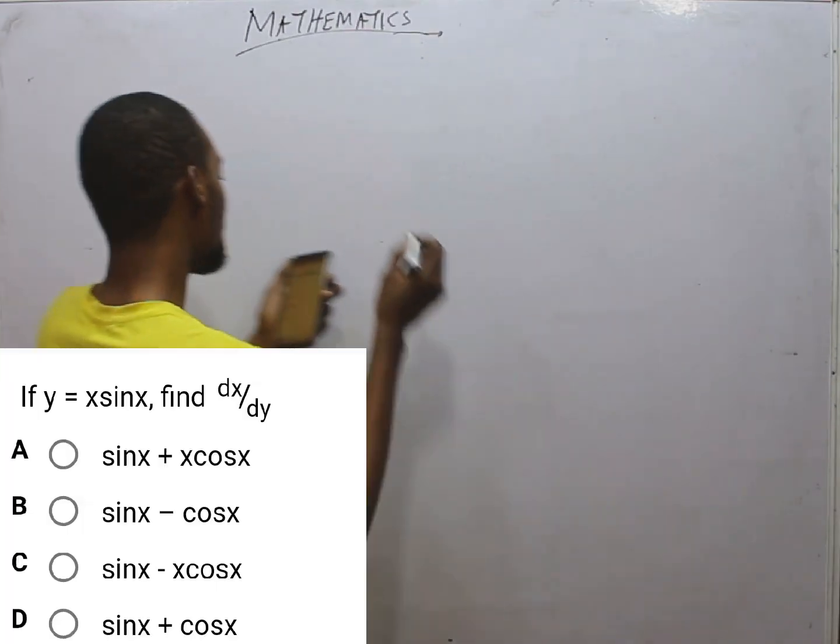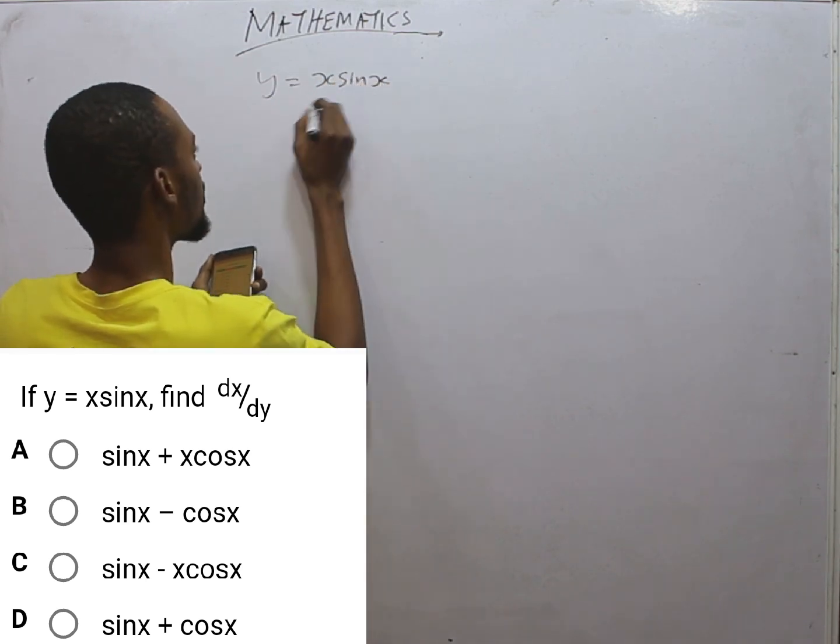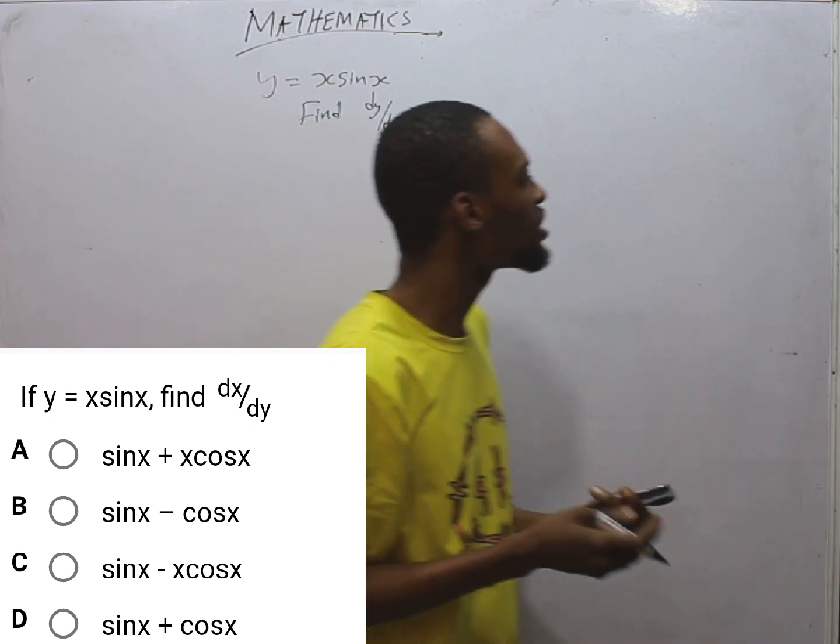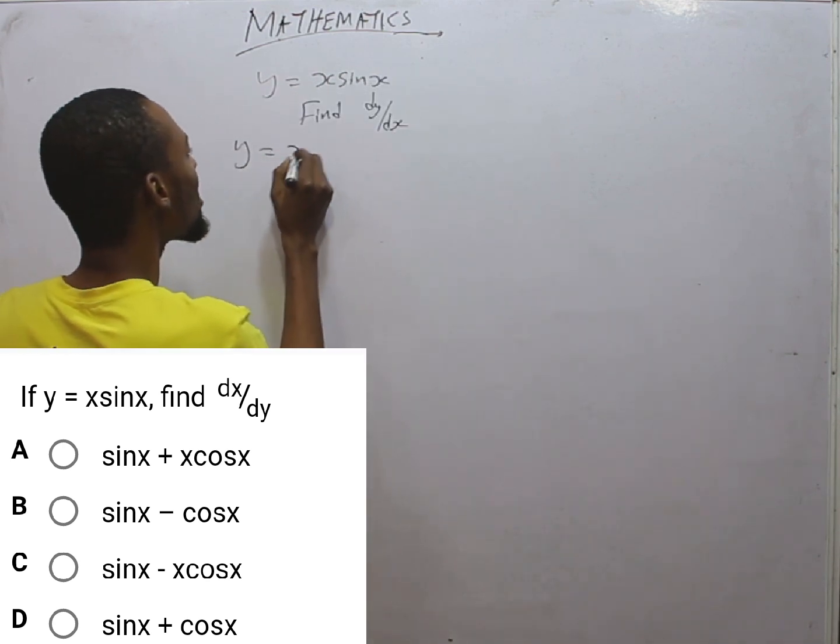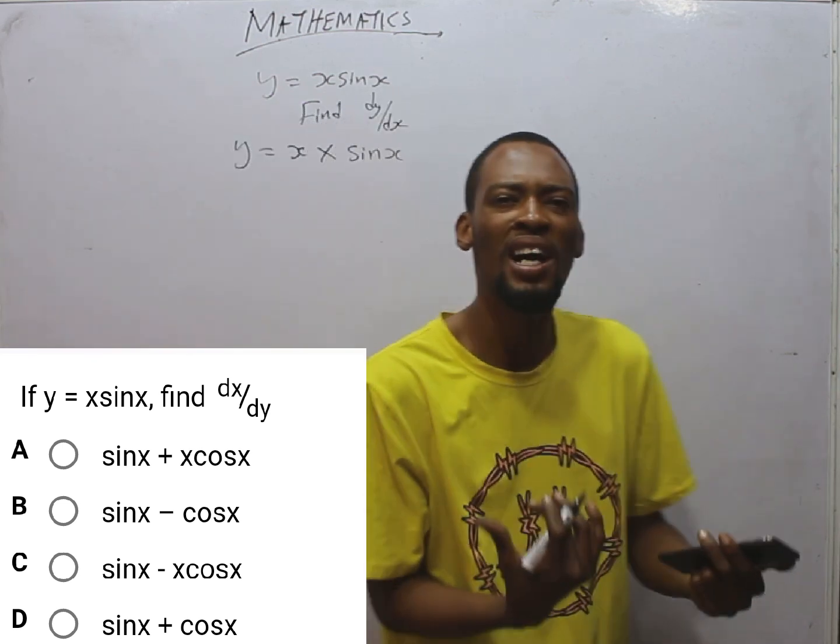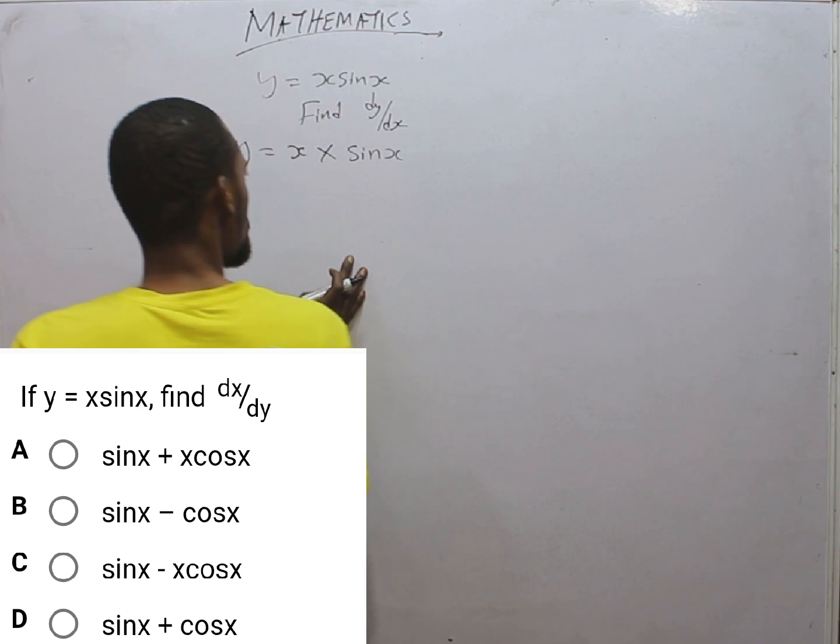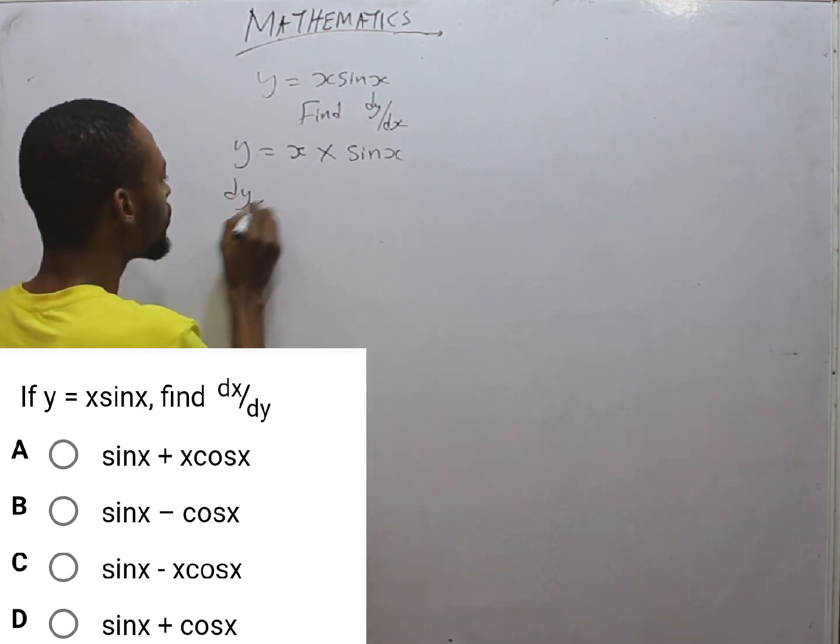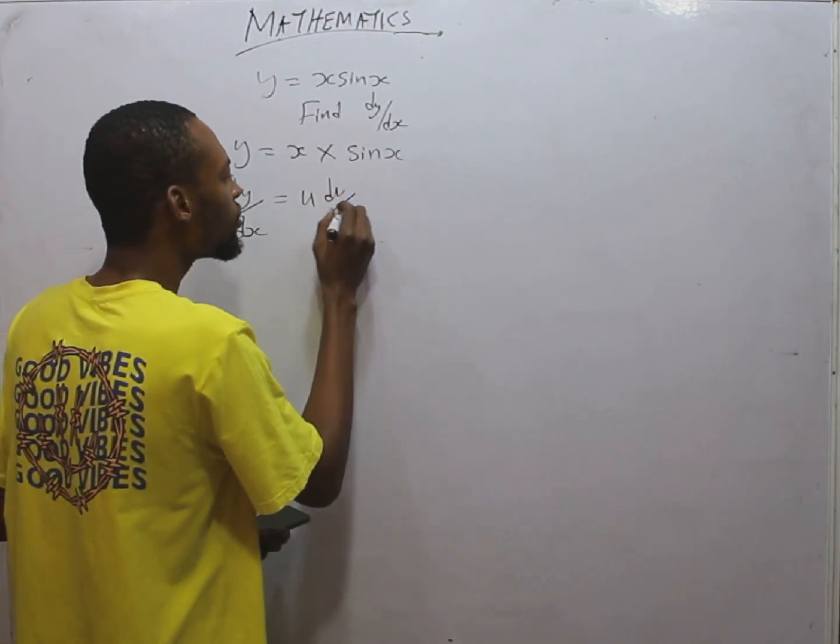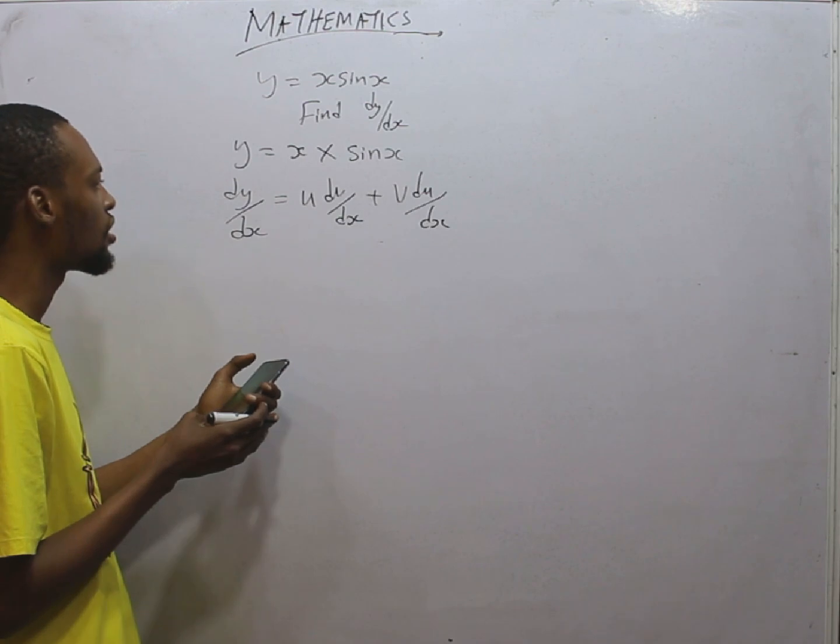Look at this question. It says if Y equals S sine S, find dY over dS. What is this? This is simply Y equals S times sine S. And in calculus, in differentiation, when you are multiplying, what do we use? We use multiplication rule, and that is called product rule. Product rule states that dY over dS, which means differentiating Y with respect to S, equals U dV over dS plus V dU over dS. That is product rule.